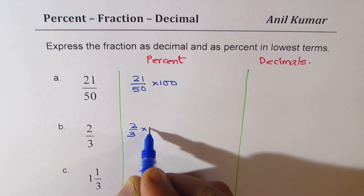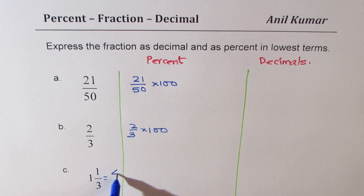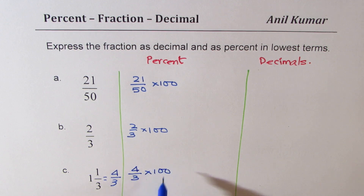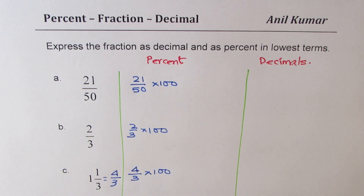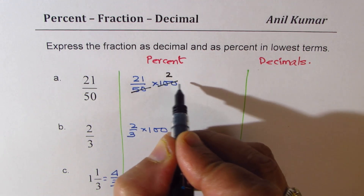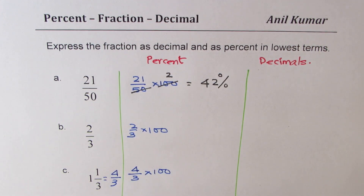So you get 2 over 3 times 100. For the mixed number 1 and 1 over 3, convert it to the improper fraction 4 over 3, and then multiply by 100 to get percent. You could simplify at this stage — 50 goes 2 times into 100 — so we get 42 percent.